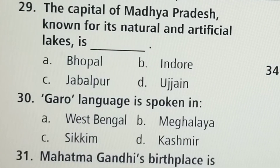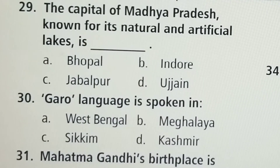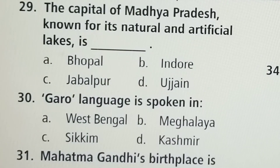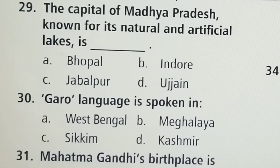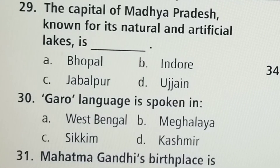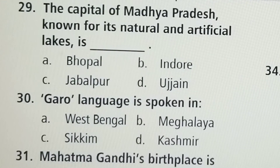Next question: The capital of Madhya Pradesh, known for its natural and artificial lakes, is — Option A: Bhopal, Option B: Indore, Option C: Jabalpur, Option D: Ujjain. Option A, Bhopal, is the correct answer.